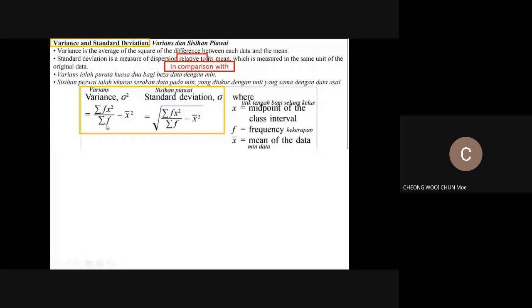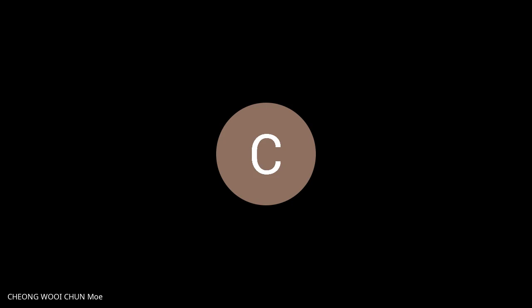Looking at example 10: to find the variance we use the formula — sum of x squared minus mean squared. But now we have to put f in front because it involves midpoint x and the frequency. If it only involves x with no frequency, there's no f. For grouped data we use f in front of the formula.